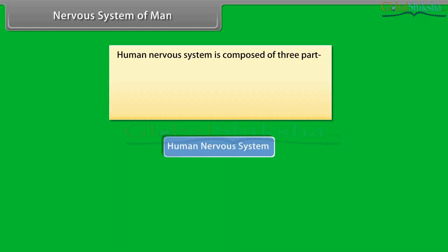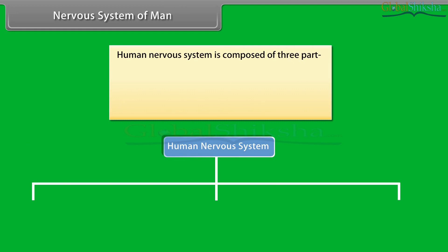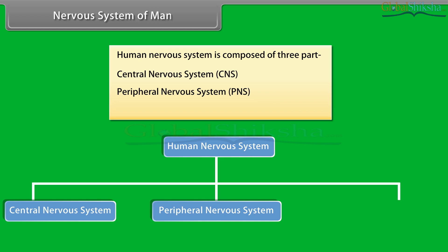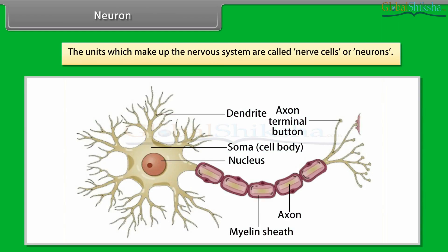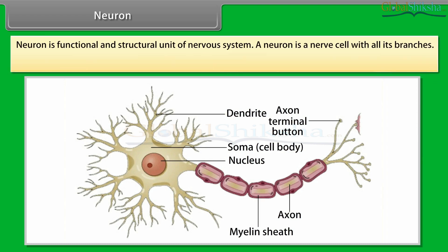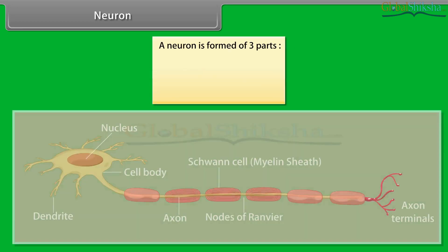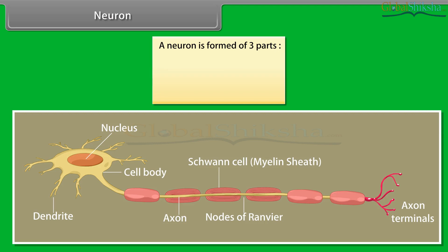The human nervous system is composed of three parts: the central nervous system (CNS), the peripheral nervous system (PNS), and the autonomic nervous system (ANS). The units which make up the nervous system are called nerve cells or neurons. A neuron is the functional and structural unit of the nervous system — a nerve cell with all its branches. It is the longest cell in the human body, about 100 cm long, and is formed of three parts: cytone, dendrites, and axon.